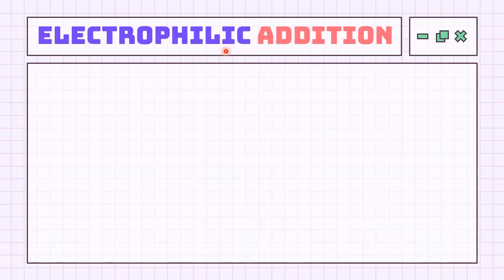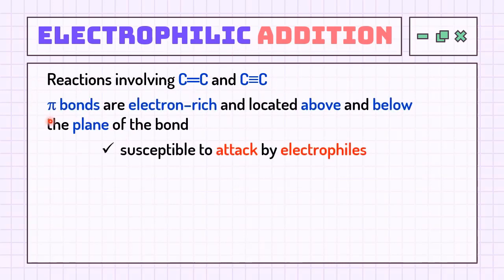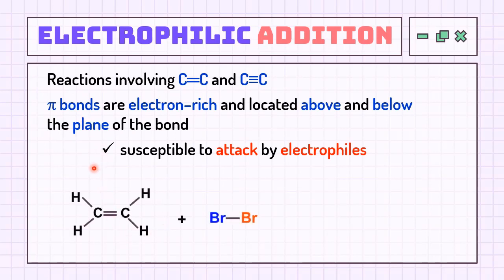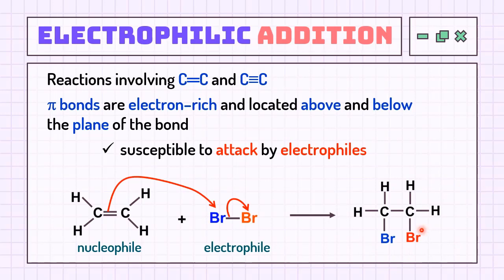Electrophilic additions means an electrophile is added to a nucleophile. This type of reaction involves only carbon-carbon multiple bonds as its nucleophile, where the nucleophilic site lies on the pi bond. For example, an unsaturated hydrocarbon as the nucleophile attacks Br₂ as the electrophile to form the product 1,2-dibromoethane.